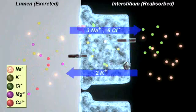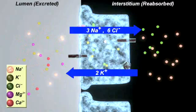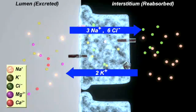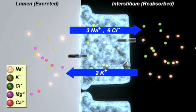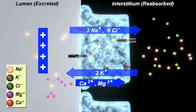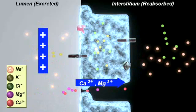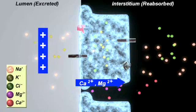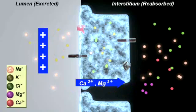The net result is a continuing transport of three sodium ions and six chloride ions from the luminal fluid into the interstitium. This sodium is reabsorbed into the circulation. Because of the secretion of potassium, a positive voltage is generated in the lumen, resulting in reabsorption of positively charged ions through the paracellular junction.